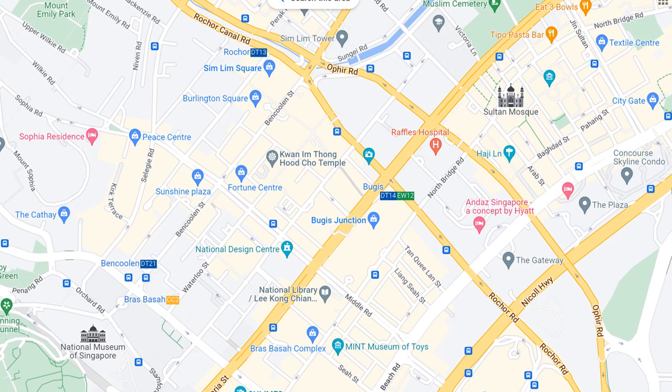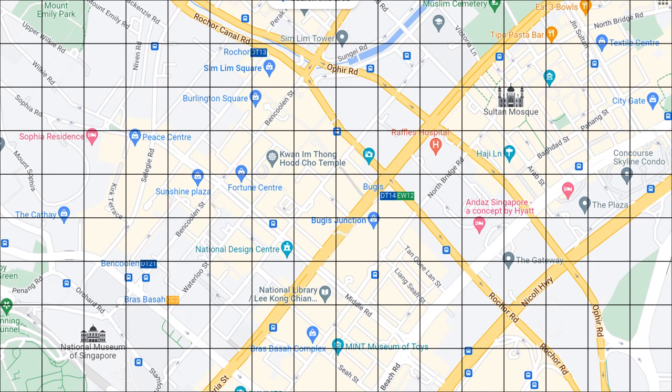First, it would be nice to divide this map into boxes or grids. Then we need a reference point where everybody knows. In this case, I'm going to assume everybody knows where the National Museum is, and let's call this the start point.